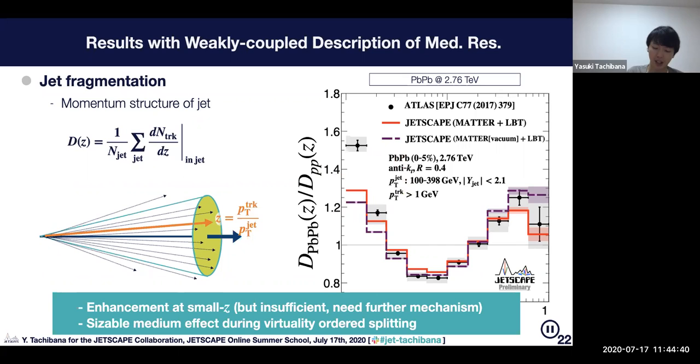Here, actually it's not related to medium response effect, but the dashed line shows the result without medium effect in MATTER high virtuality evolution. We can see a difference between the dashed line and the solid line which includes all the medium effects.